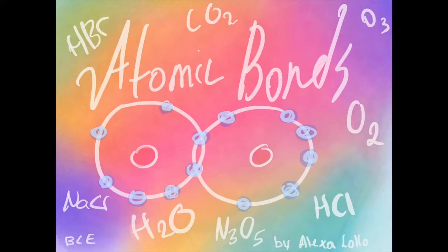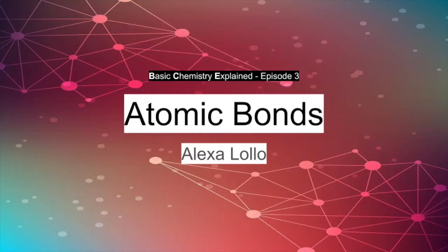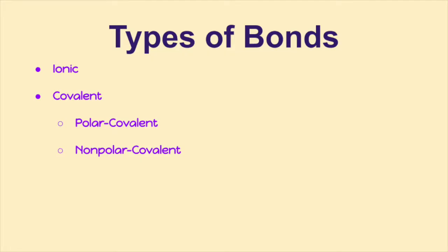Welcome to the third episode of Basic Chemistry Explained: Atomic Bonds. Today we are going to talk about three types of bonds: ionic, polar covalent, and non-polar covalent.